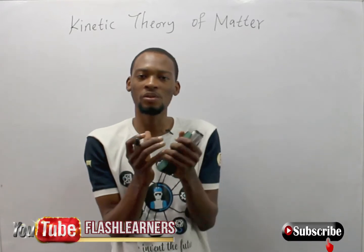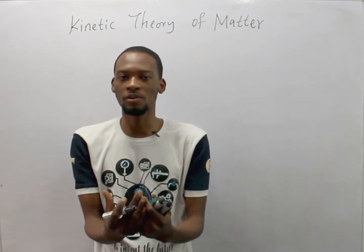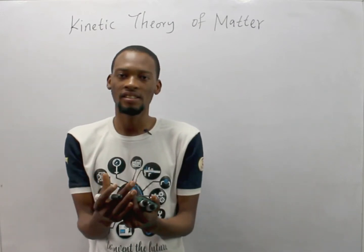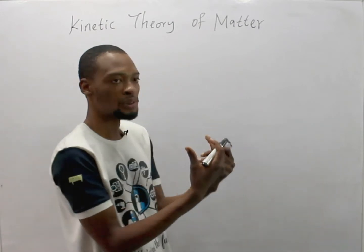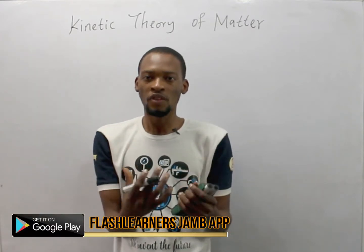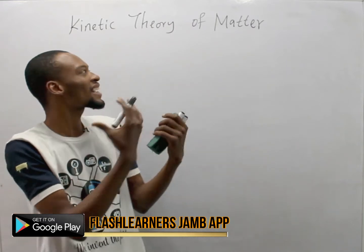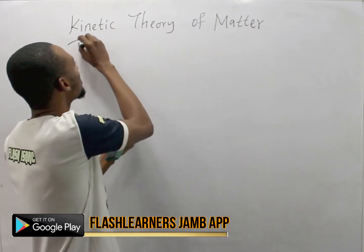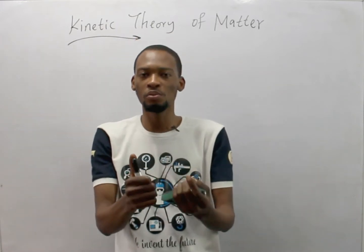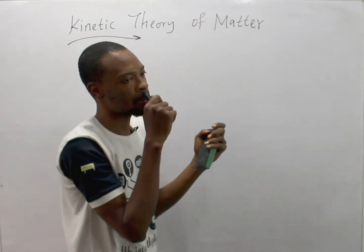These states are based on the particles holding them, so matter is made up of particles. Matter possesses energy — either kinetic or potential energy. These are energies that can be possessed by particles. While potential energy is energy due to position, kinetic energy is energy a body has or possesses due to motion.